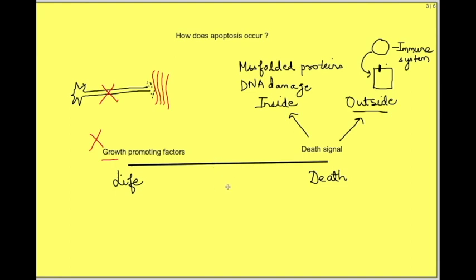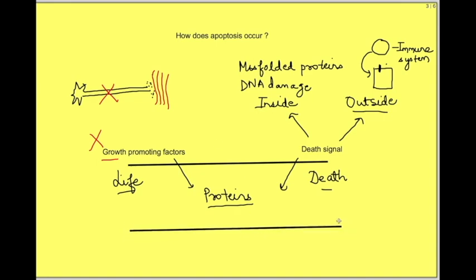This balance between life and death can also be stated in molecular terms. The absence of growth-promoting factors or the death signal changes the milieu inside the cell in terms of certain proteins — specifically a family known as pro-apoptotic proteins and anti-apoptotic proteins. When there is presence of growth-promoting factors or absence of death signal, there are more anti-apoptotic proteins in the cell promoting life. Conversely, absence of growth factors or presence of a death signal leads to an increase in pro-apoptotic proteins.